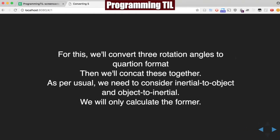As you recall, all we really need to do is convert three rotation angles to the quaternion format, and then we'll concatenate these together. As per usual, we need to consider inertial-to-object and object-to-inertial. We're only going to compute the former, but the latter is very easily calculatable too, so I'll show you that formula.